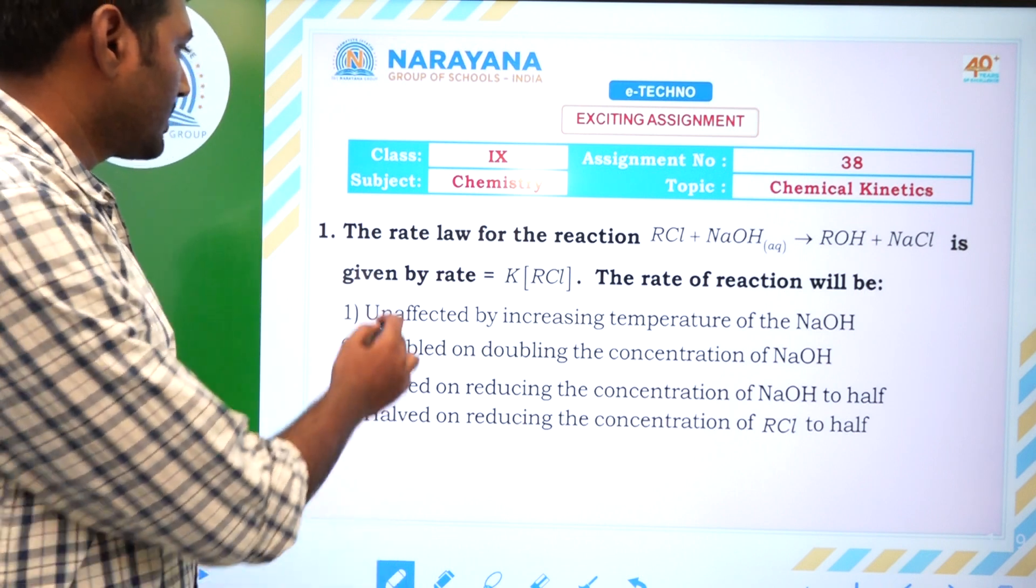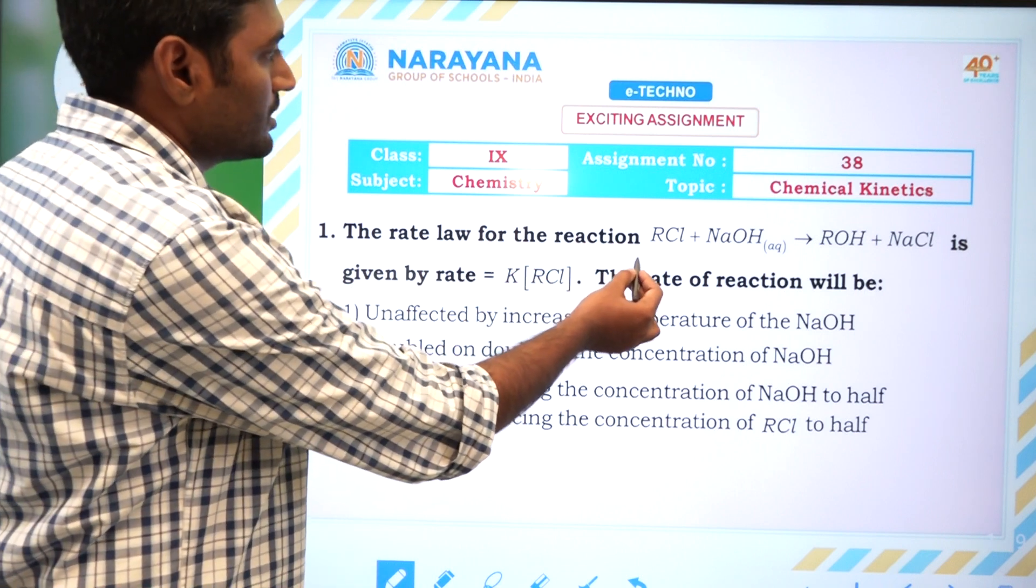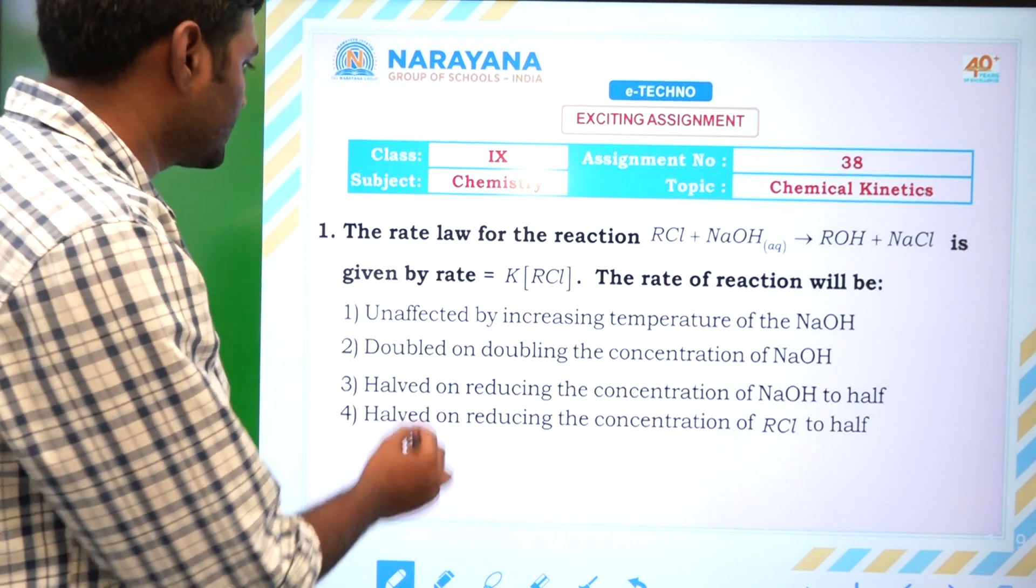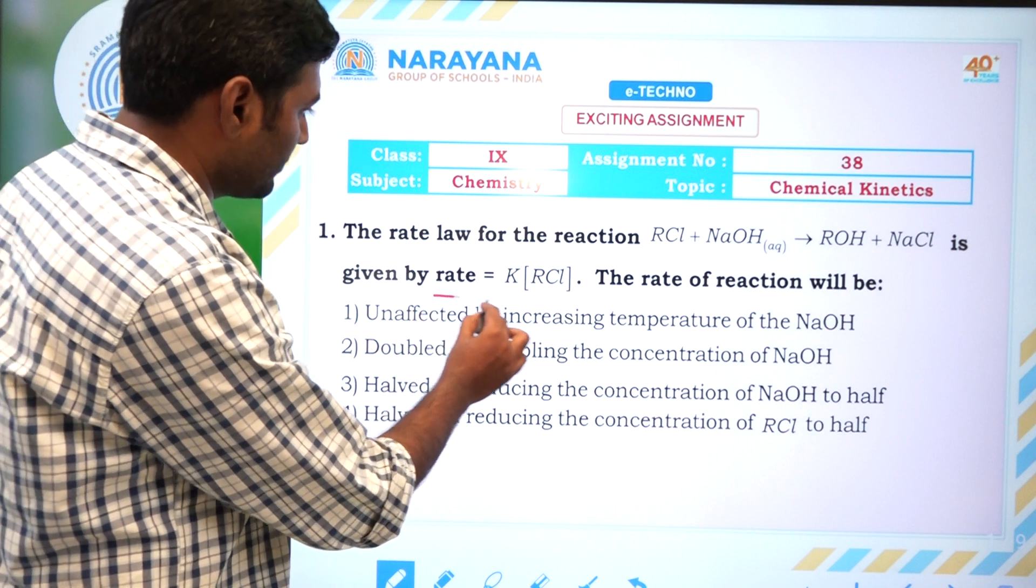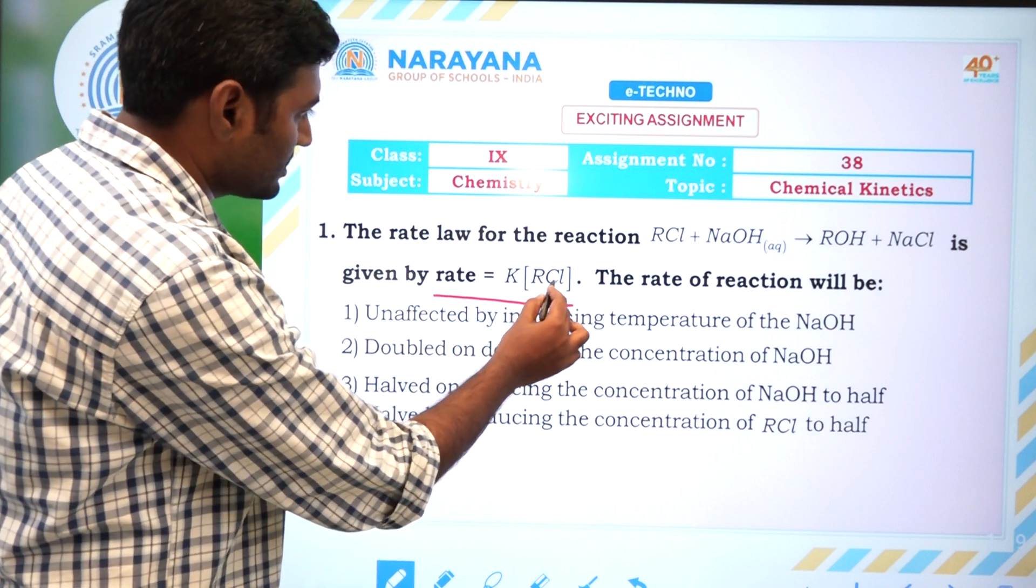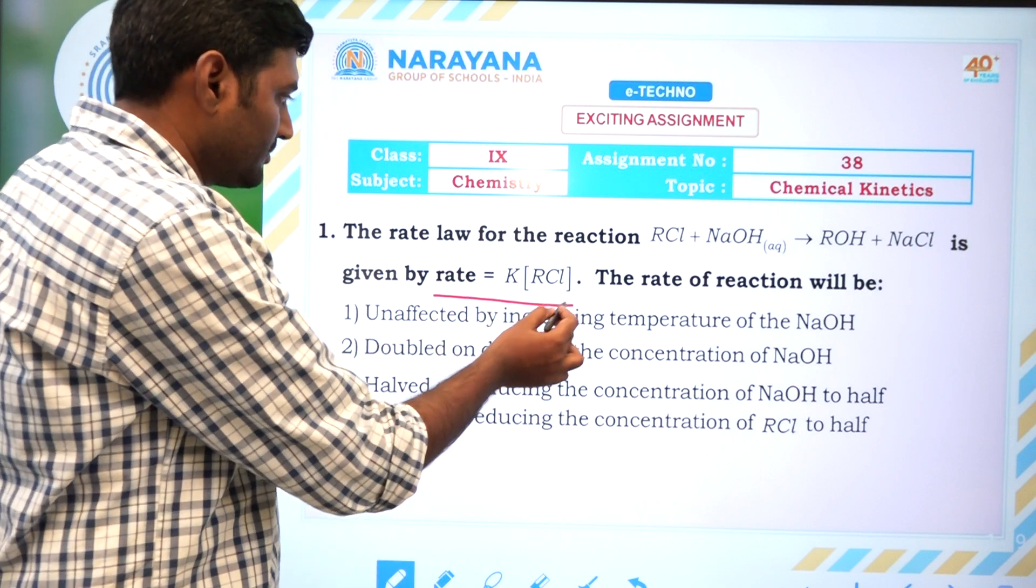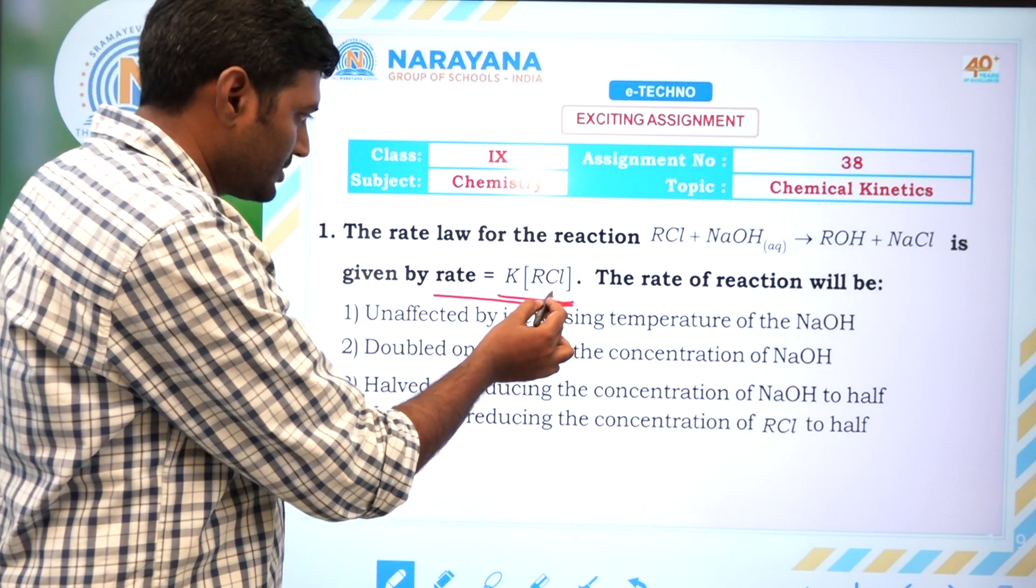In this first one, the rate law for the reaction RCl plus NaOH gives ROH plus NaCl is given by rate equals K times [RCl]. The rate of the reaction, if it is given like this, depends upon only this reactant.